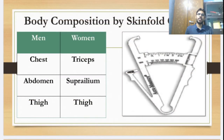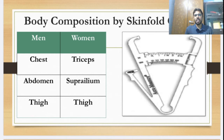The third method is body composition by Skinfold Caliper. There are many body parts you can use to measure and calculate your body fat percentage, but here we will take only 3 body parts for men or women.